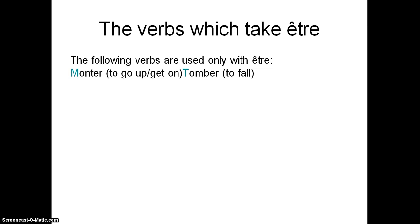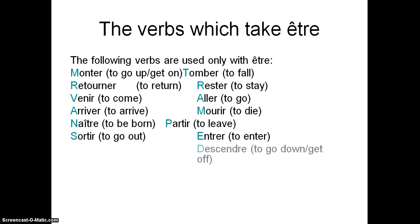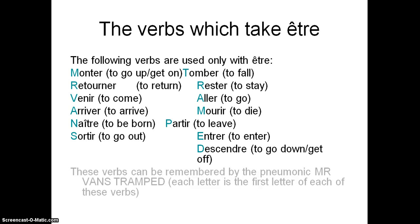So which ones use être? We have monter, tomber, retourner, rester, venir, aller, arriver, mourir, naître, partir, sortir, entrer, descendre. If you have a look at the coloured letters I've put on the left-hand side of each of the verbs, it spells out Mr. Van's Tramp. So that's a mnemonic you can use to remember all the verbs that take être.